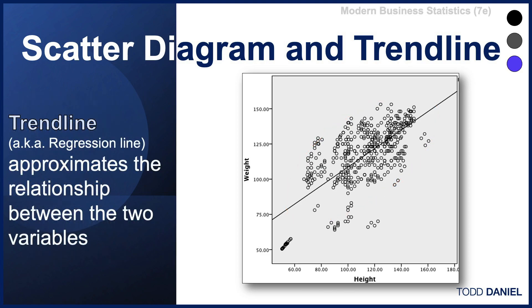Also called a regression line, that approximates the relationship between the two variables.